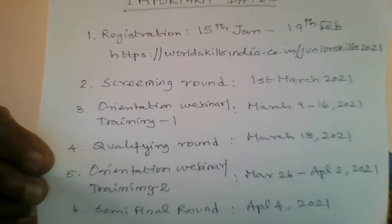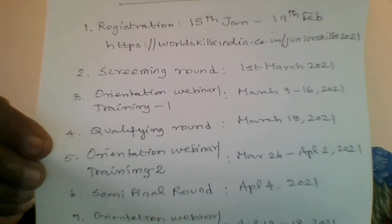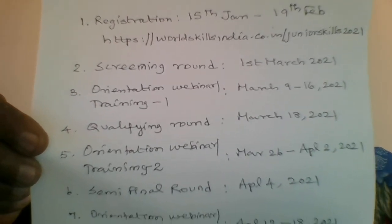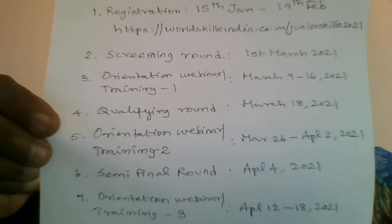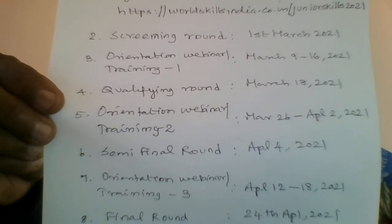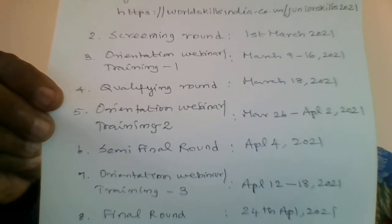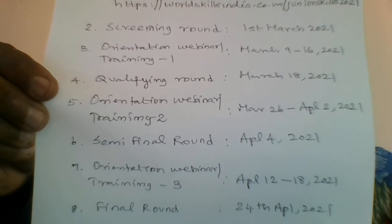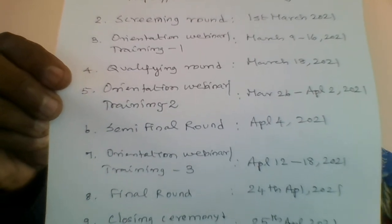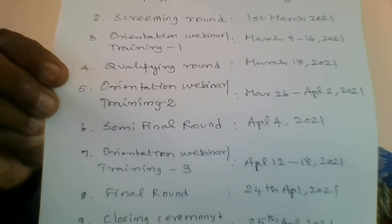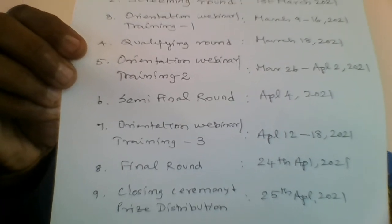You must register before February 19th. There will be a screening round on March 1st, followed by an orientation webinar and training for selected students from March 9th to 16th. A qualifying round will be held on March 18th, then another orientation webinar and training from March 26th to April 2nd. The semi-final round is on April 4th, third orientation training runs April 12th to 18th, the final round is on April 24th, and the prize distribution closing ceremony is on April 25th.